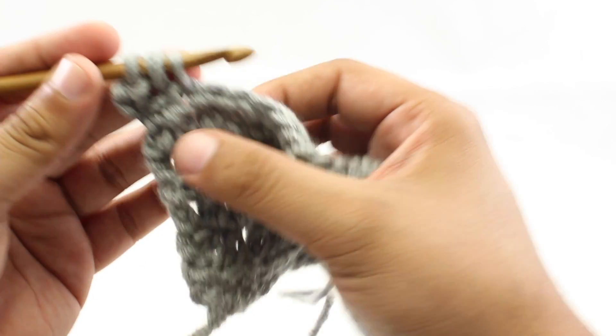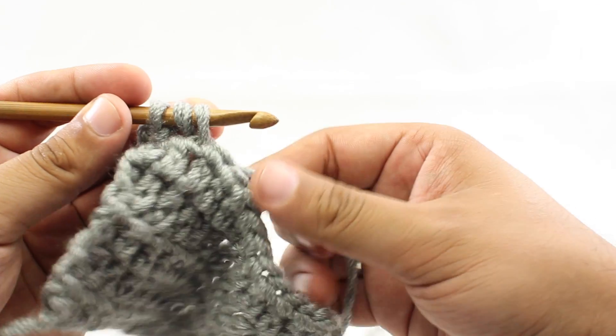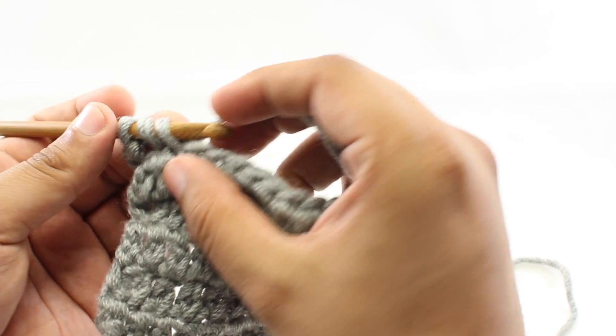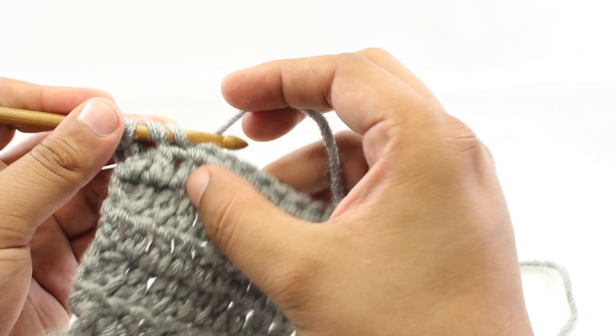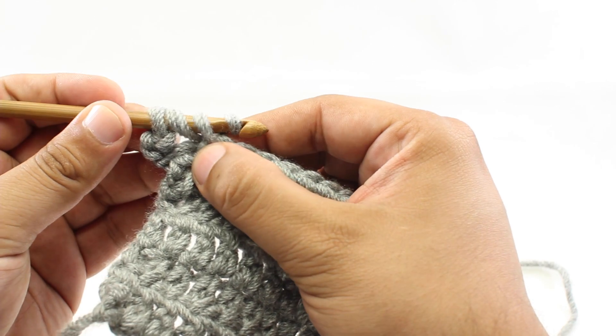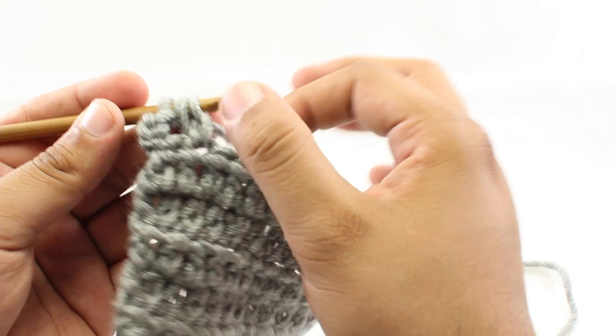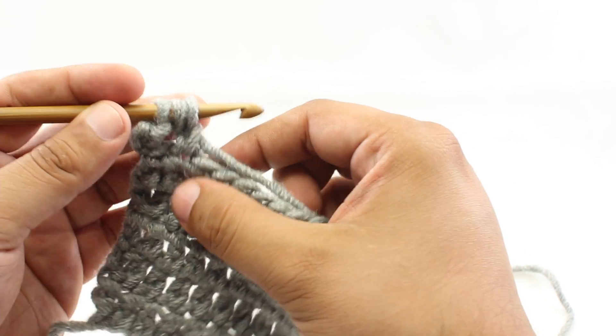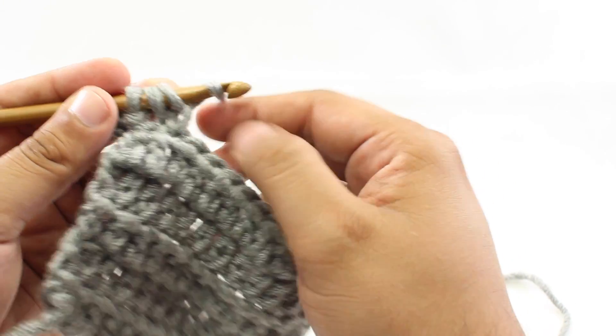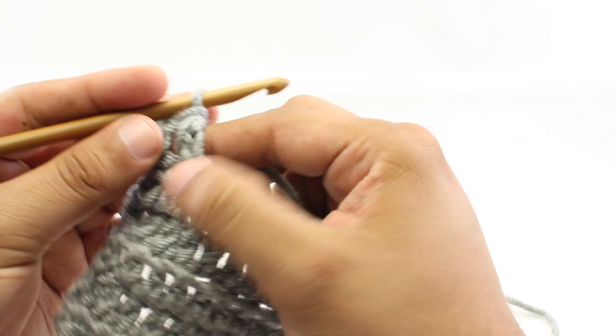Now this is where the stitch differs from a half-double crochet. We're going to yarn over and draw through the first loop on our hook - so we're basically doing like a chain 1. And then for step 4, we're going to yarn over and draw through all 3 loops on the rest of our hook.